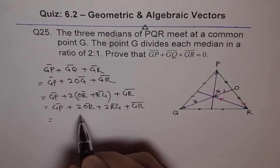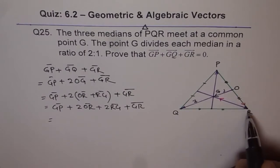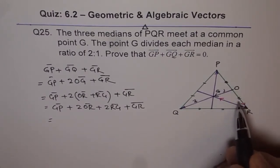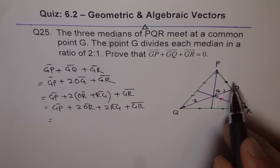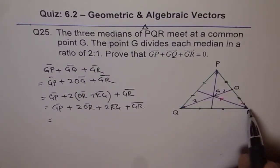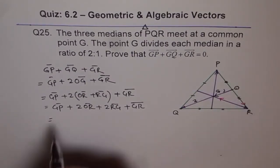Now, 2 times OR. OR and 2 times OR will be PR, correct? Since O is the midpoint of PR, 2 times OR will be PR. So we will replace this with PR.